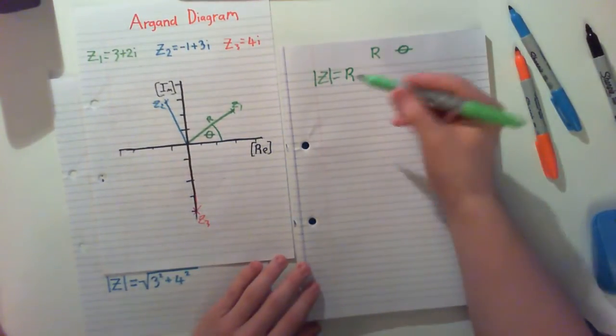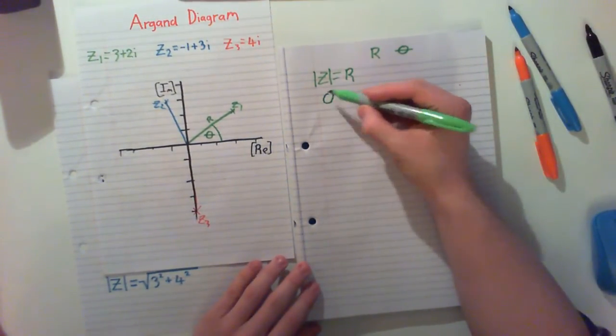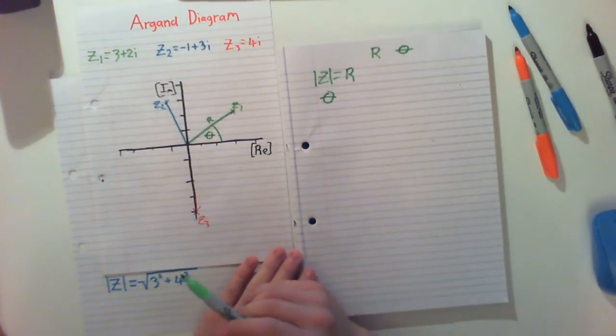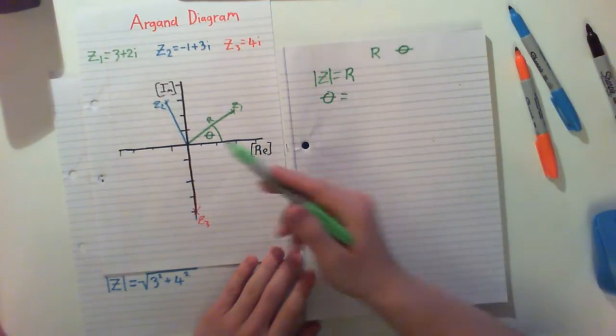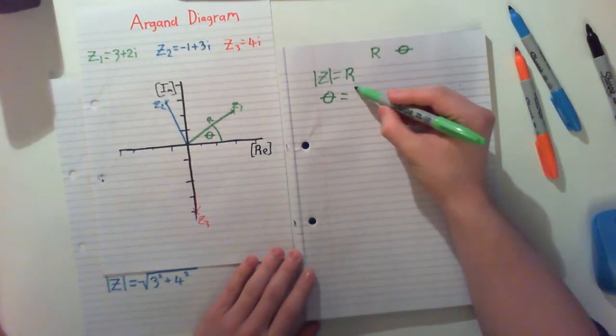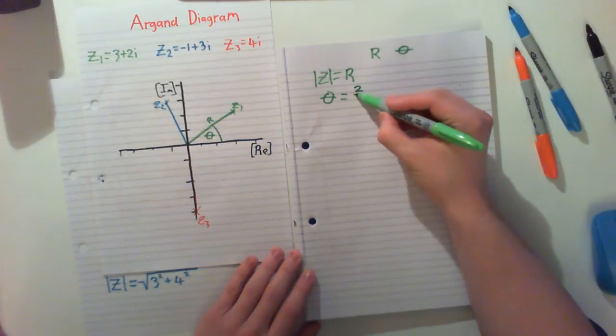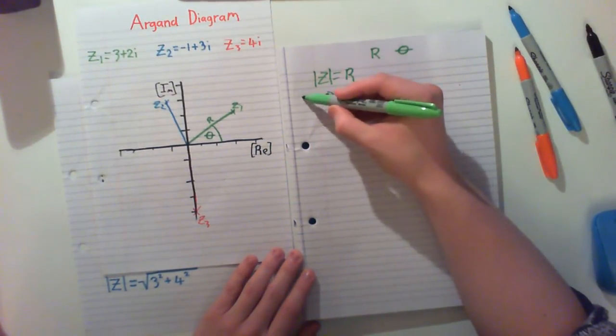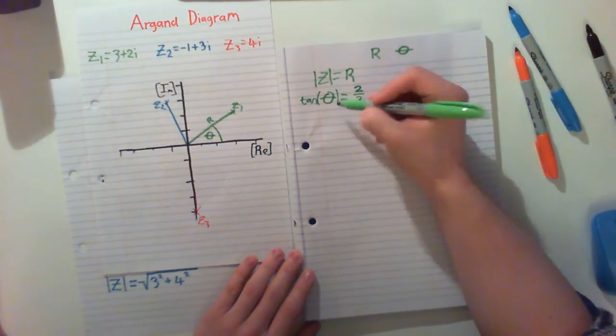So to calculate theta then, it depends on which section of the graph you're in. But simply for Z1, we can do the Y component, which is 2 divided by 3. And this is equal to tan of our angle.